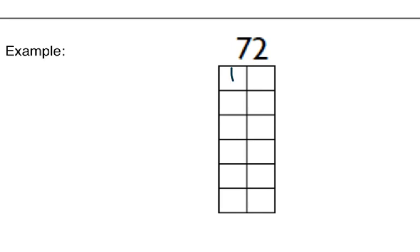72 divided by 1 is equal to 72. Next, 72 divided by 2 is equal to 36. Next, 72 divided by 3 is equal to 24. Next, 72 divided by 4 is equal to 18.